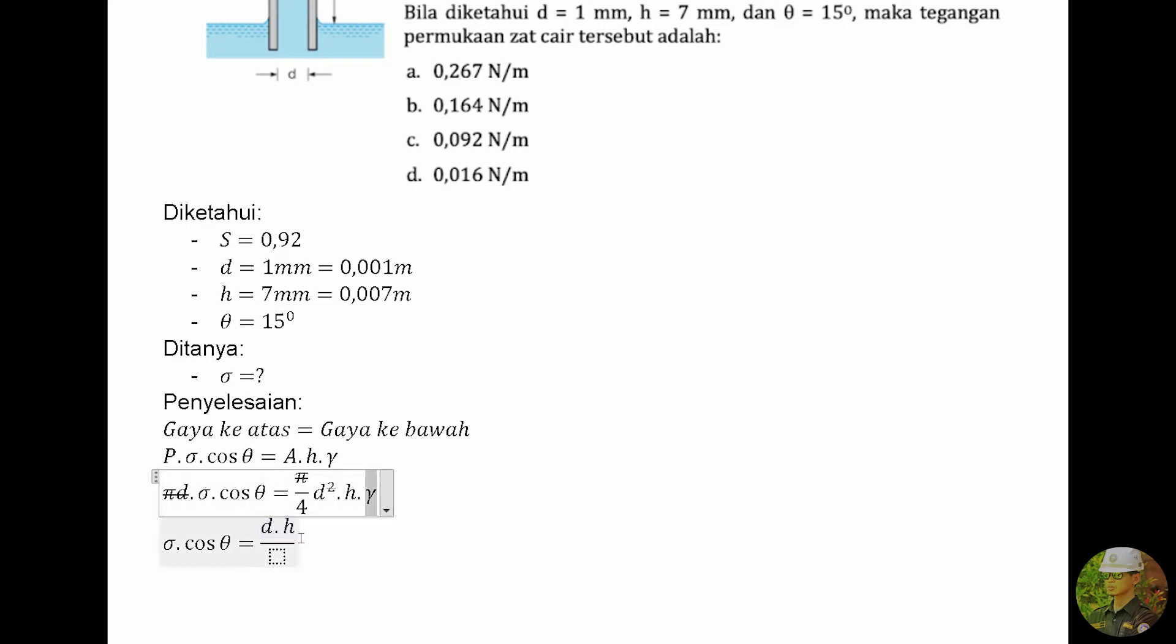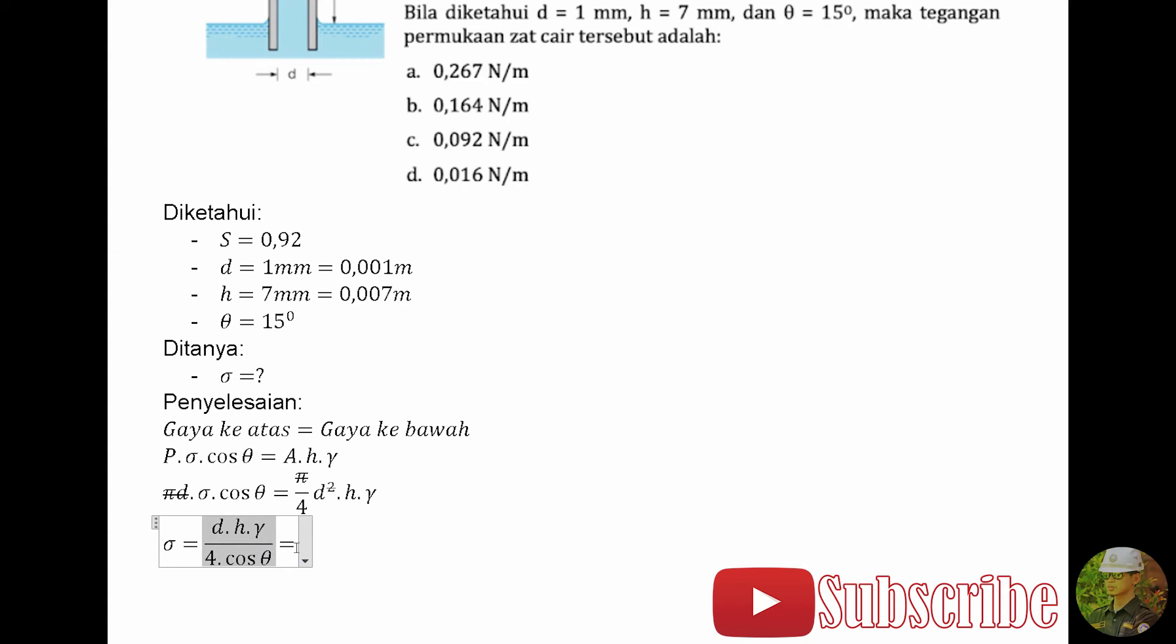Dan ada row zat cair. Bagian bawahnya ada 4. Karena kita hanya mencari sigma disini, maka cos theta kita pindahkan. Kalau dia melewati sama dengan, maka dia jadi pembagi.